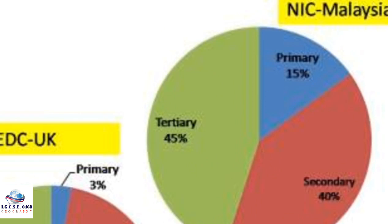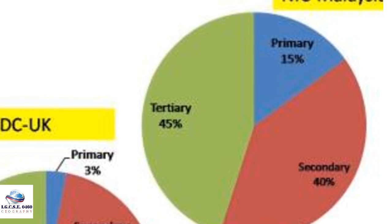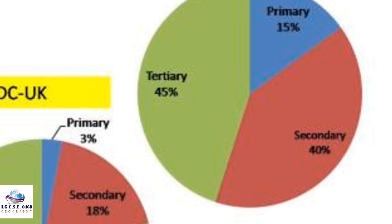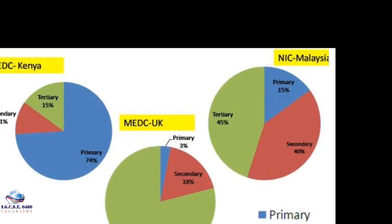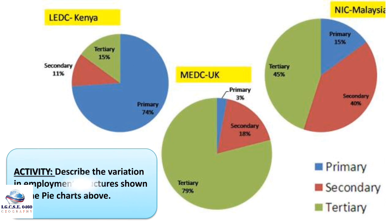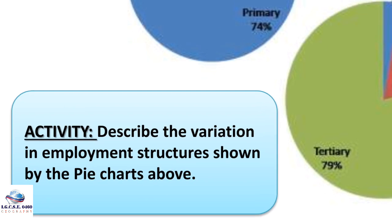Looking at a newly industrialized country — Malaysia — because it is becoming industrialized, the primary sector employs only 15%, the secondary sector employs 40%, and the tertiary sector has 45%. This shows the differences in employment structures between LEDCs, MEDCs, and NICs. Now describe the variation in employment structure shown by the pie charts above.